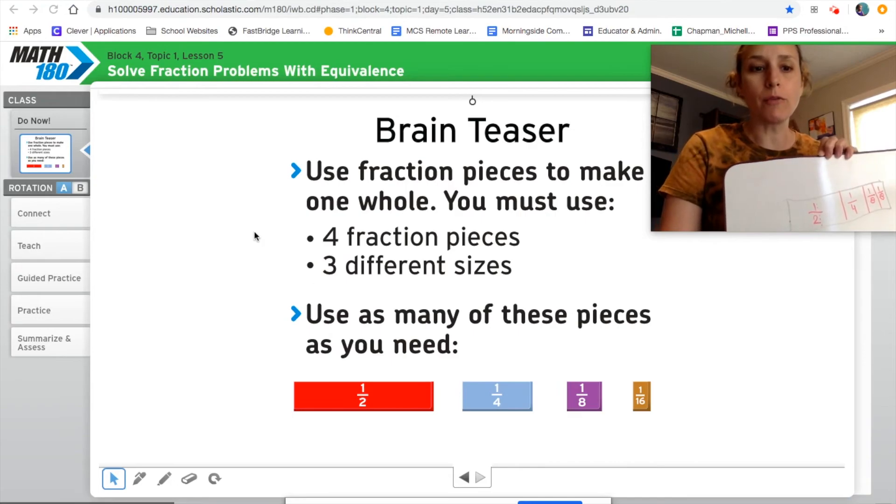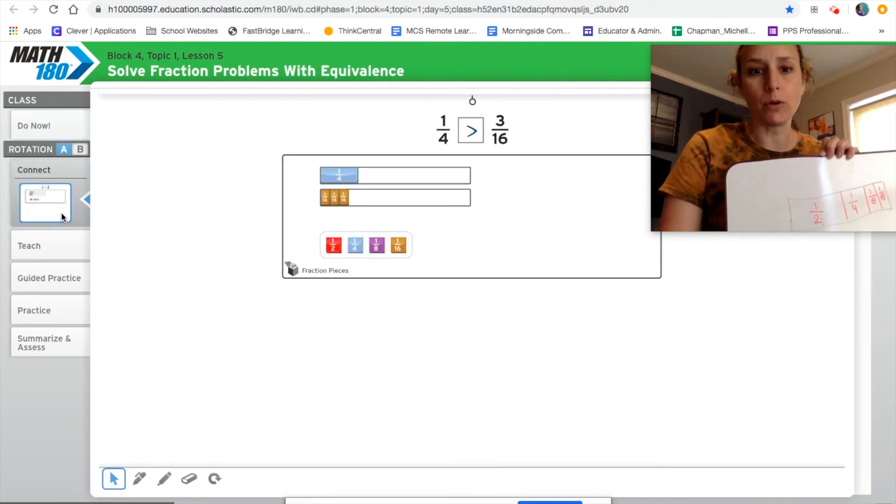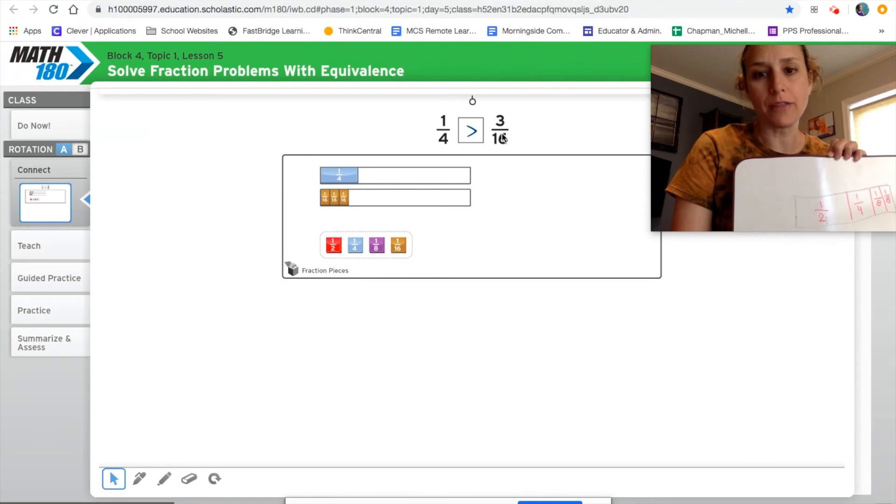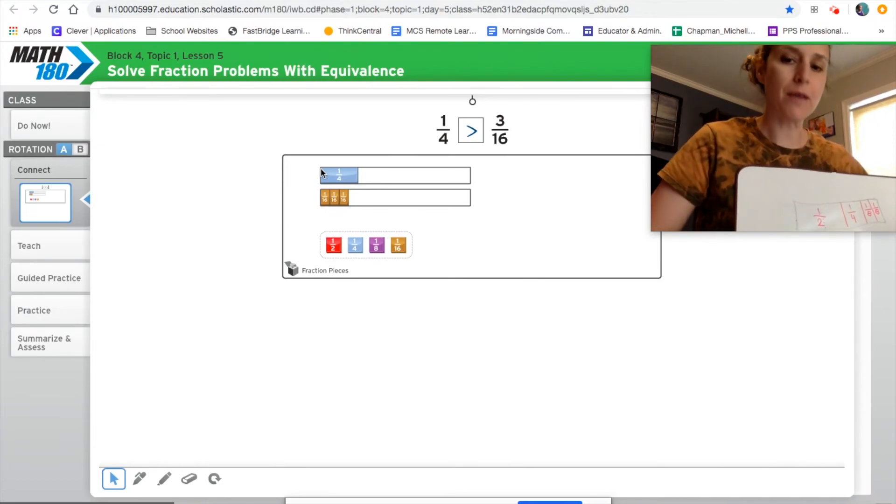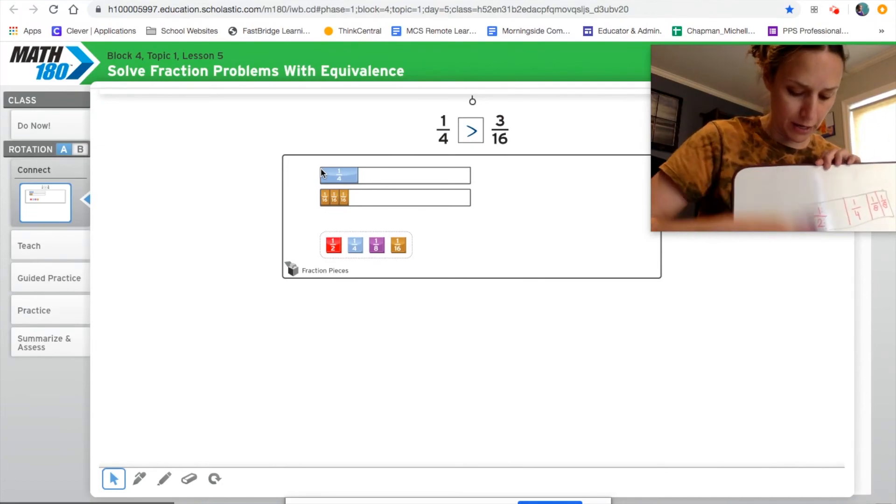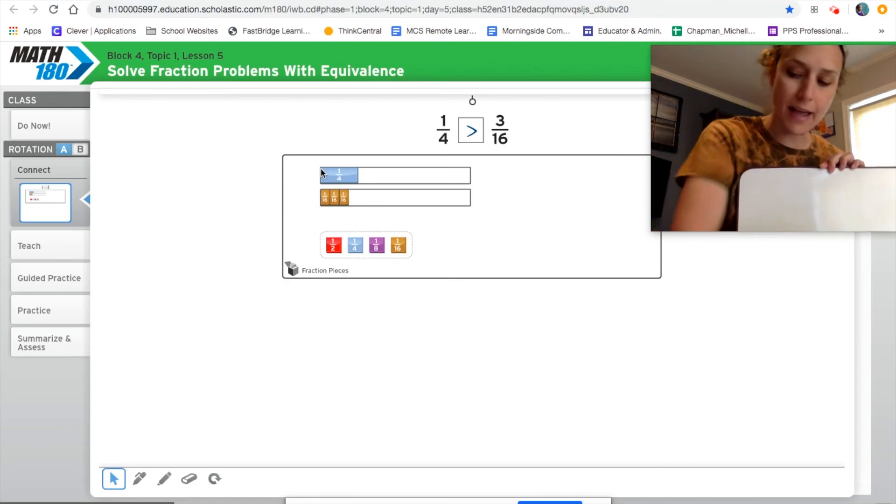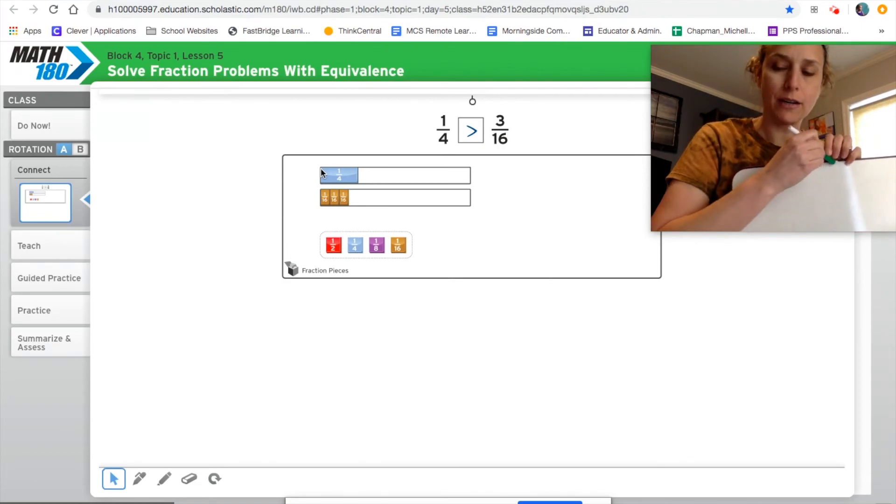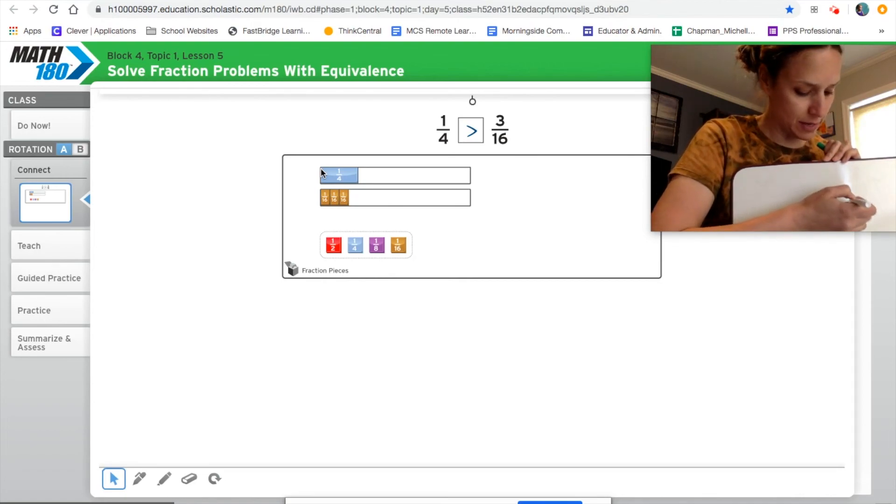This is going to go along with what we're doing today. Because if you think about what we've been working on, we've really been using models to connect our ideas of equivalent fractions. So if I look here at one fourth and I look at three sixteenths, I can see from the model that one fourth is larger. But when I prove why that is, I think about my equivalent fractions.